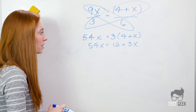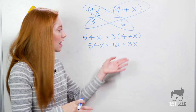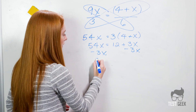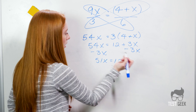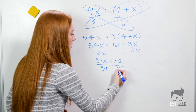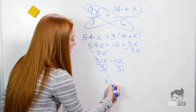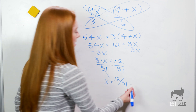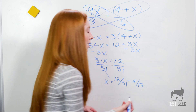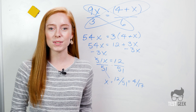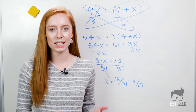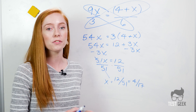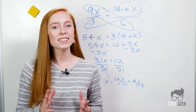Now we have variables on both sides. We want to bring them all together, so let's subtract 3x from both sides. We get 51x equals 12. Last step — divide by 51, and we get x equals 12 over 51, which simplifies to 4 over 17. It's always good to brush up on your multiplication tables and your ability to do simple division and addition in your head, because you need to be able to simplify fractions like this to find the right answer.